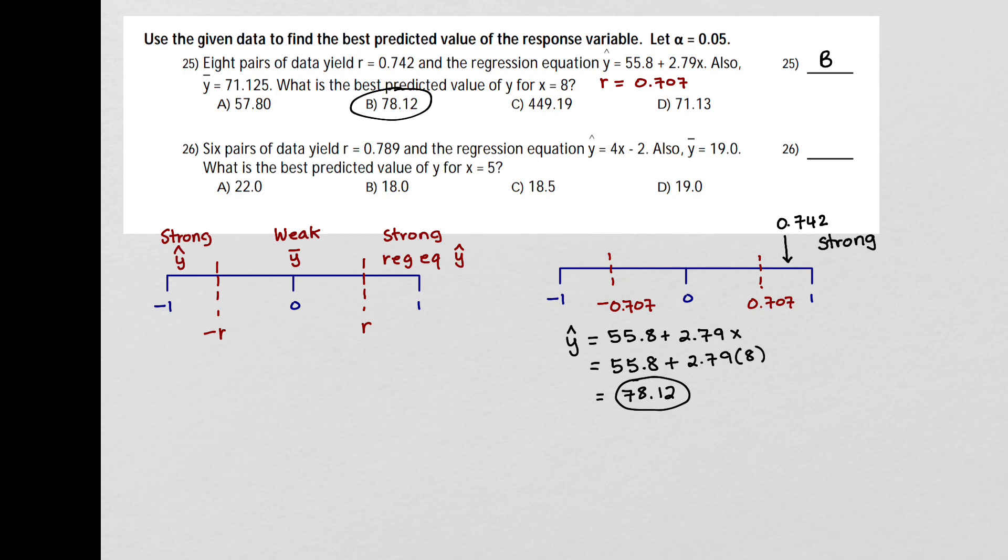Now let's take a look at question 26. It says 6 pairs of data yield r equals 0.789. And then it gives the rest of the information. So again, I'm going to make a number line. And I'm going to put in my critical values. Now, because we only have six pairs of data, that's going to change those critical values. So that's going to be 0.811.